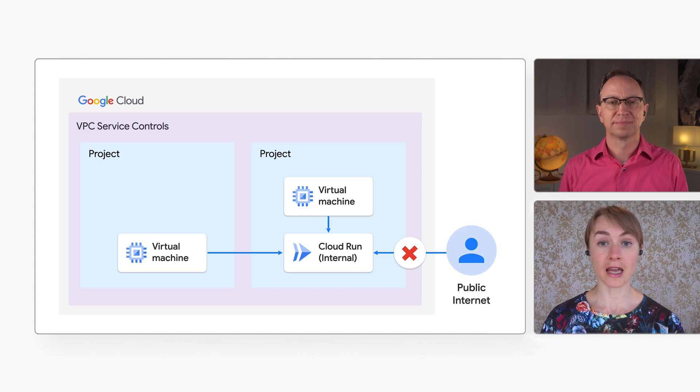So even if I make a mistake in IAM and set access to public, the projects will be protected by the VPC Service Controls perimeter. Excellent. And thank you for showing us this, Natalia. I should start using VPC Service Controls to put up perimeters between my projects. I think I would sleep better at night with that extra control. I'm glad to hear that, Martin. Thanks for having me. And thank you, everyone, for watching. If you have questions for Natalia or me, please add them to the comments section. Let me know if there are any other topics you'd like to hear about in future episodes. I read every single comment. Until next time!